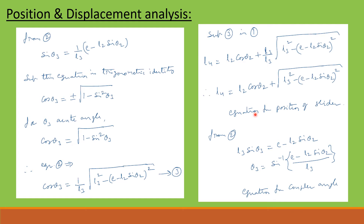This is the equation for slider position. From equation 2 again, L3 sin theta 3 equals E minus L2 sin theta 2, so theta 3 equals sin inverse of (E minus L2 sin theta 2) divided by L3. This is the equation for coupler angle. Having derived these two equations, let us solve a problem in the next slide.